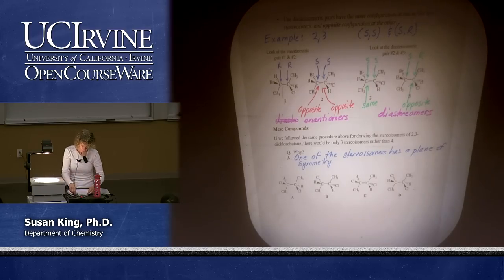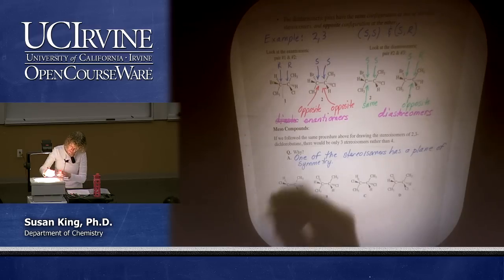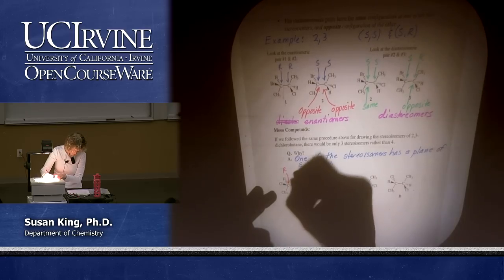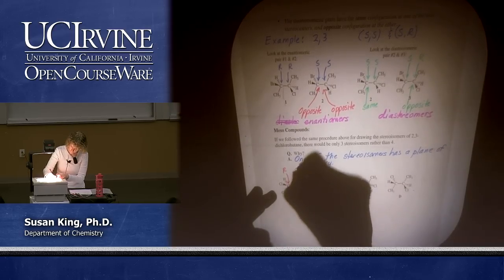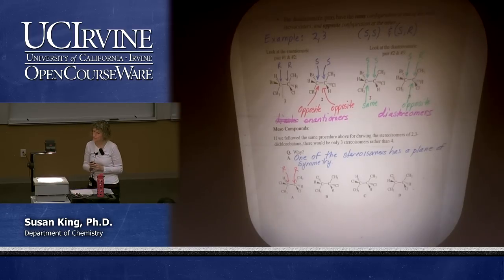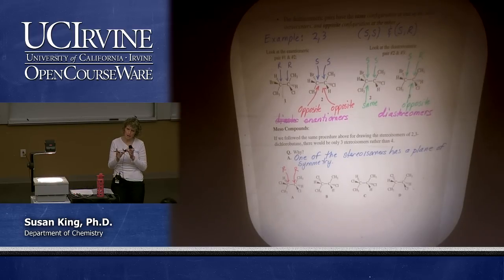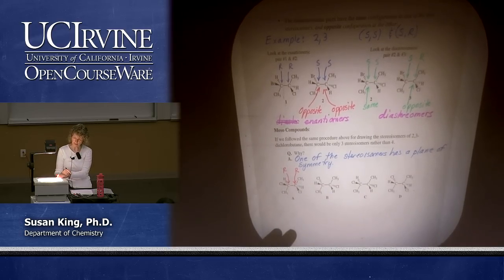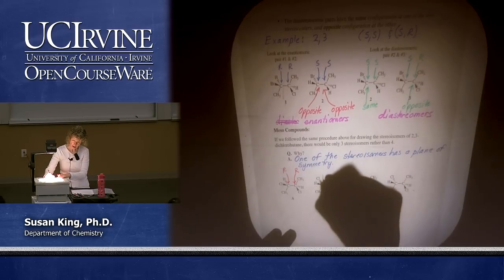Let's look at this compound — we're going to start with the R and the R configuration. When you're doing these problems you don't need to assign configuration, but some of you like to so I'm including that here. What's the configuration at this carbon on the left? It's S, because we've switched two groups.